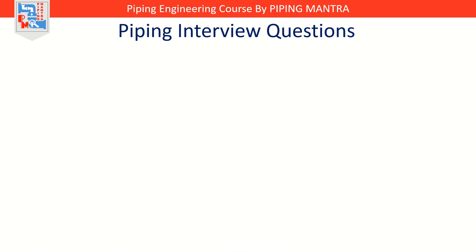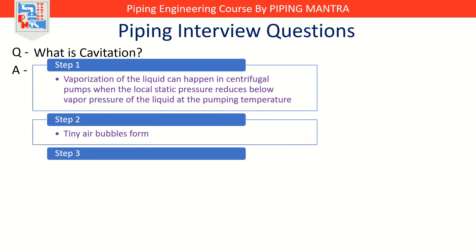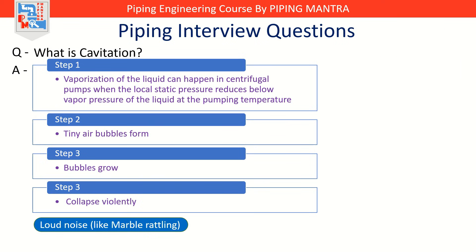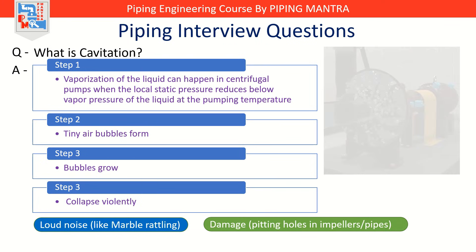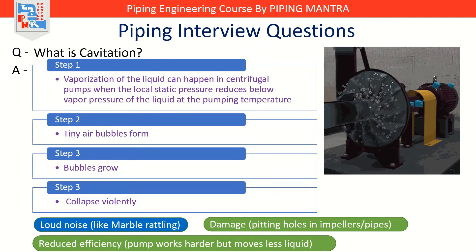Let's move into a problem every pump engineer fears — cavitation. What exactly is cavitation? Cavitation happens when a liquid in a pump vaporizes because the local pressure drops below its vapor pressure. It's like when you try to suck a thick milkshake through a straw but the straw isn't fully in the shake — you get pockets of air. In pumps, these pockets are vapor bubbles. They form, grow, and then collapse violently. This causes loud noises — sounds like marbles rattling inside — damage such as pitting and erosion on impellers and casing, and loss of efficiency where the pump works harder but moves less liquid.